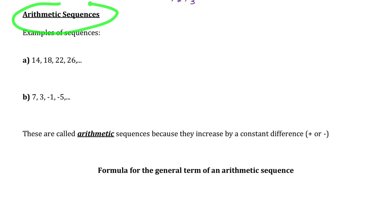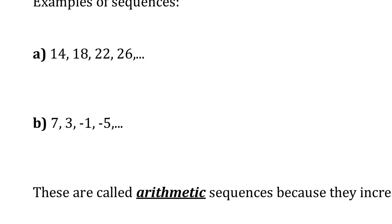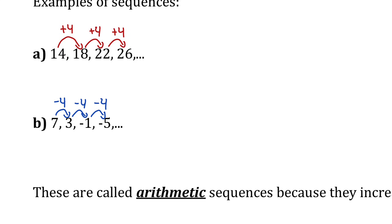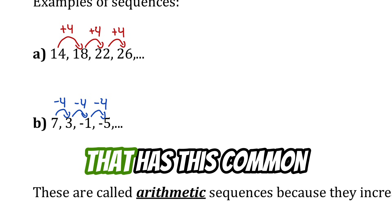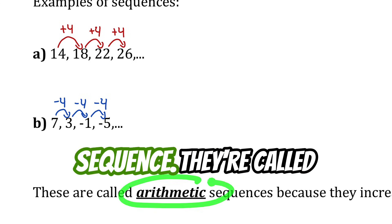Starting with arithmetic sequences, let's look at two sequences of numbers. In part A, you'll probably notice that to get from one number to the next, you add 4, and that pattern holds true for the entire sequence. For part B, to get from one number to the next, you subtract 4. Any sequence of numbers that has this common difference between consecutive numbers is called an arithmetic sequence.